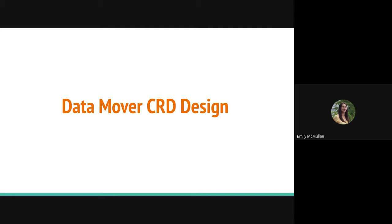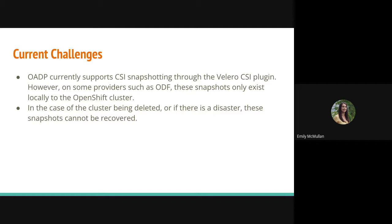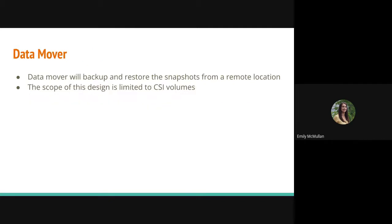Hello, everyone. I am Emily and I'll be presenting with Savita. We both work on OADP, which is an OpenShift operator that backs up and stores applications. And as of today, OADP does currently support CSI snapshotting through the Velero CSI plugin. However, on some providers, these snapshots only exist locally on the cluster. This presents a challenge for us in the case that the cluster is deleted or a disaster occurs, then we are not able to recover these snapshots.